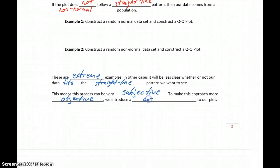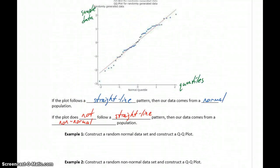So in order to do that, we'll introduce a correlation statistic to that plot. And this correlation statistic is going to help us answer the question, how good is good enough? Or how well are we fitting to that straight line pattern?